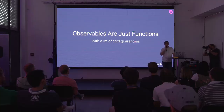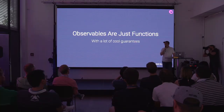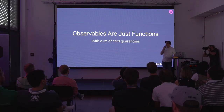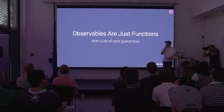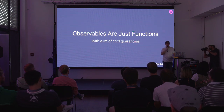So observables are just functions. If you walk away with no other knowledge from what I've spoken about today, walk away with this: observables are not some magical type — they just wrap a function and provide some guarantees.